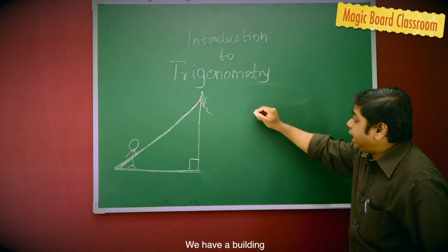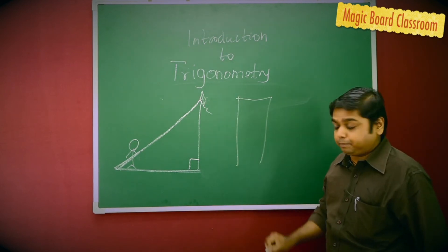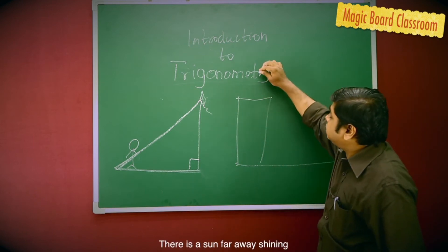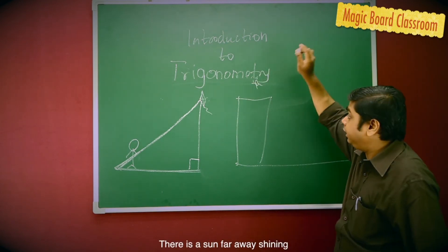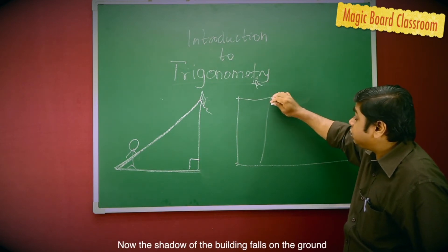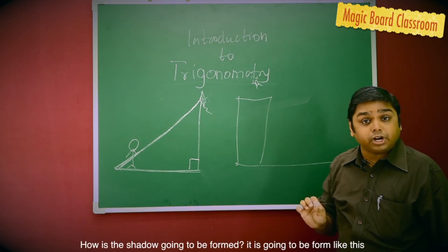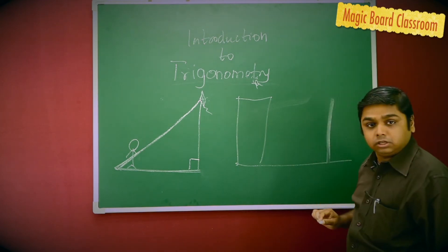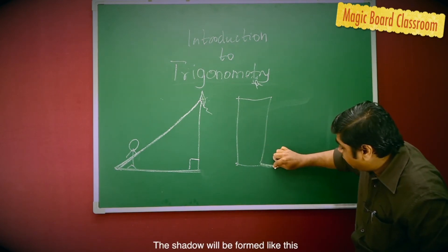Let's see. We have a building on the ground. There is the sun far away, shining. Now, the shadow of the building falls on the ground. How is the shadow going to be formed? Is it going to be formed like this? No. The shadow will be formed like this.